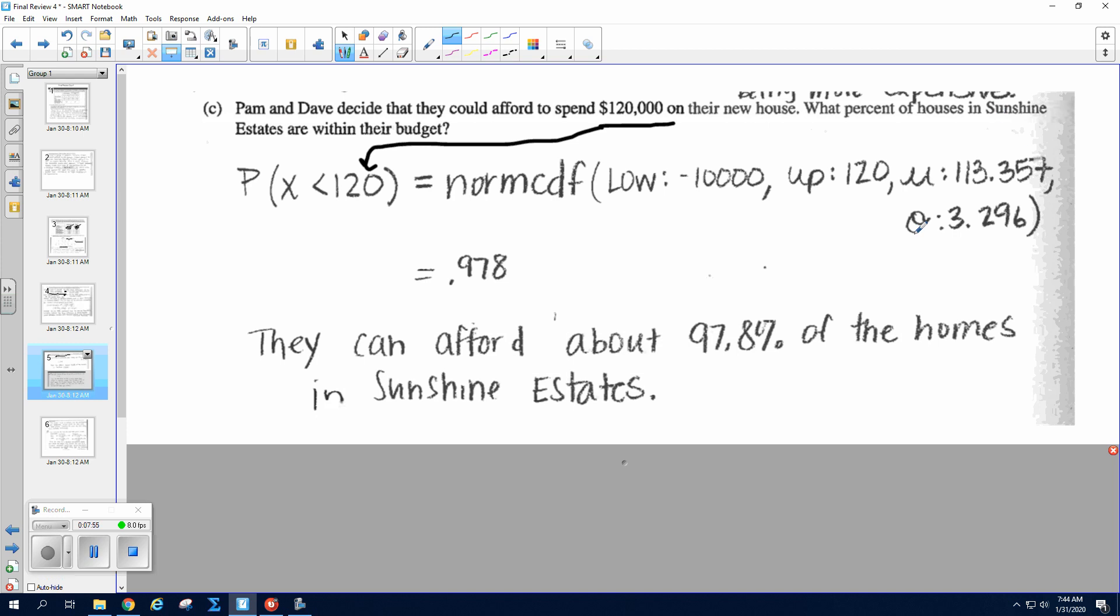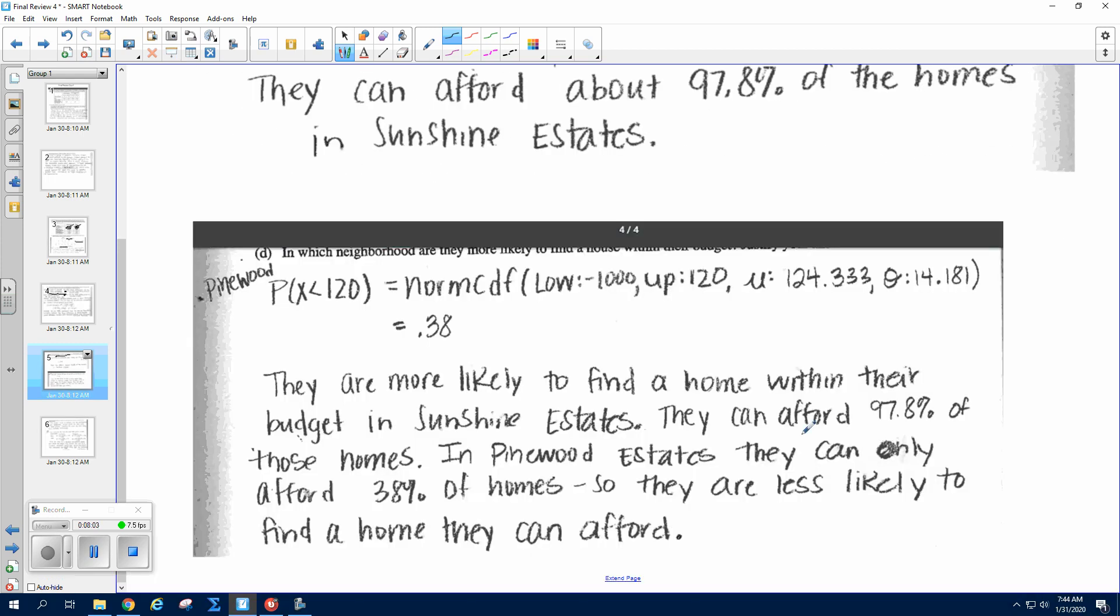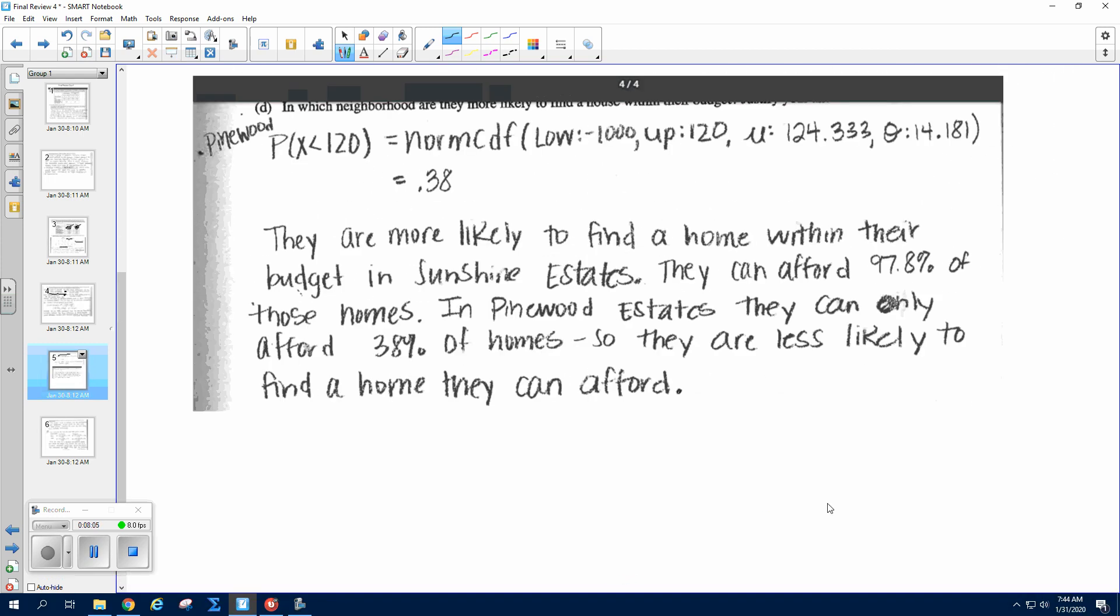Okay, so now we're going to do the same thing for Pinewood Estates, only make sure you use Pinewood Estates' mean and standard deviation. And they can only afford 38% of homes in Pinewood Estates. So they're more likely to find a home they can afford in Sunshine Estates.